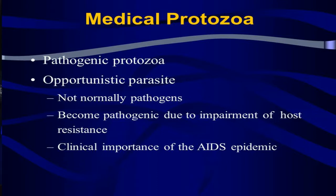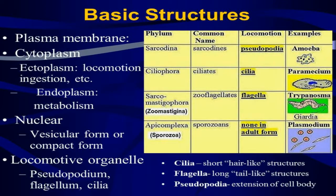Some are opportunistic parasites — not normally pathogens, but they become pathogenic due to impairment of host resistance. They have clinical importance in the context of the AIDS epidemic.